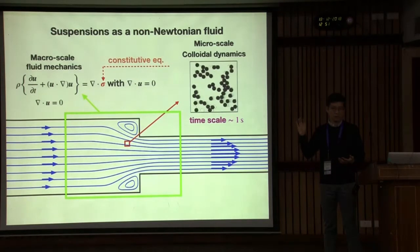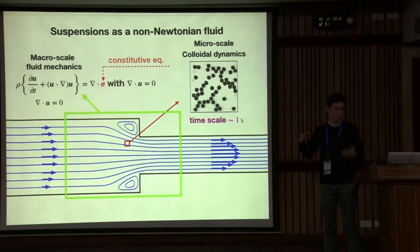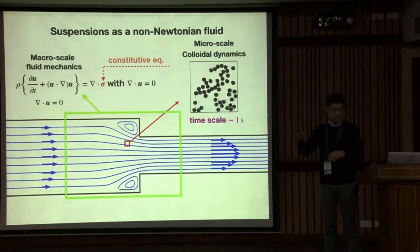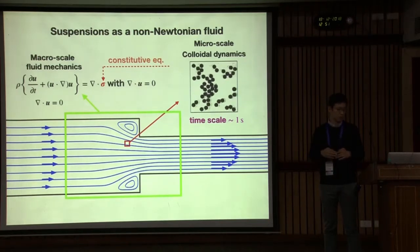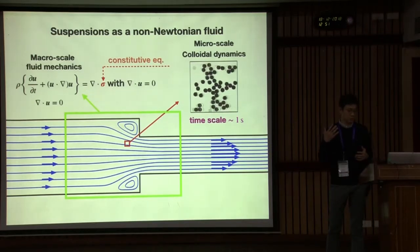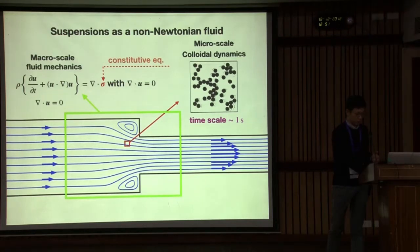The striking difference to Newtonian fluid is colloids are big and slow, so the time scale can be one second. This is very far away from equilibrium, so constitutive modeling is difficult because it's a non-equilibrium state.